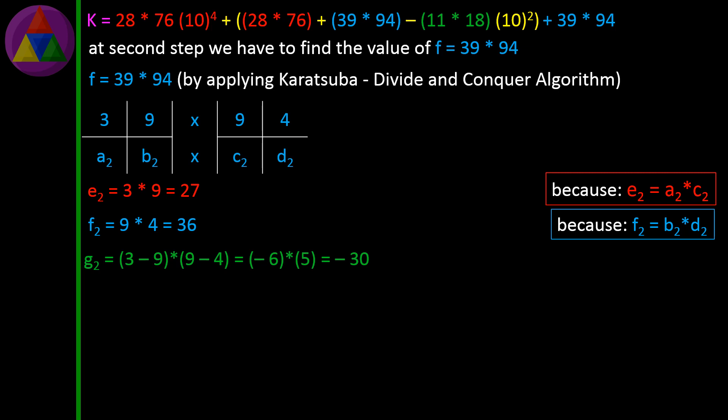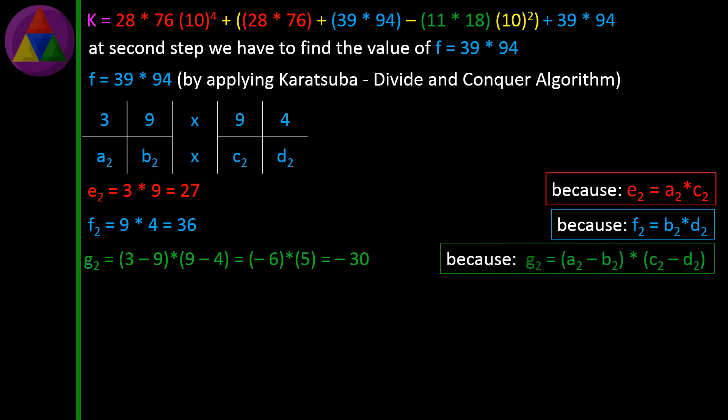G2 = (3−9) × (9−4) = (−6) × 5 = −30, because G2 = (A2−B2) × (C2−D2).